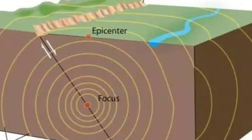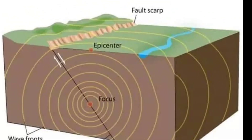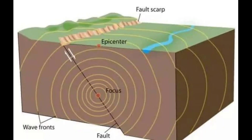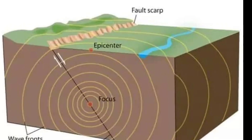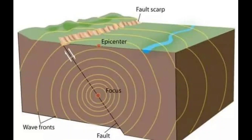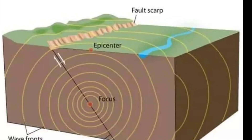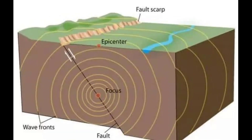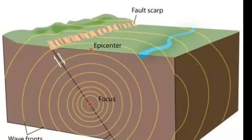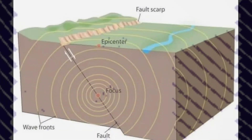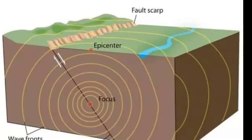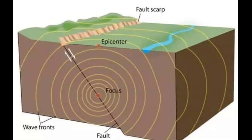An earthquake occurs when tectonic plates experience convergent or transformative plate margins. Two consecutive tectonic plates become bound to each other due to friction, while their neighboring plates continue to move. As force gradually increases and overcomes the friction, the stored energy is released and transmitted across the surface, causing the earthquake. This energy transformation is what we call an earthquake.